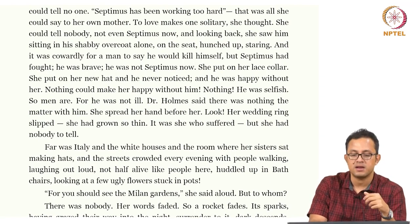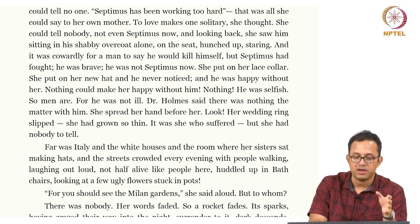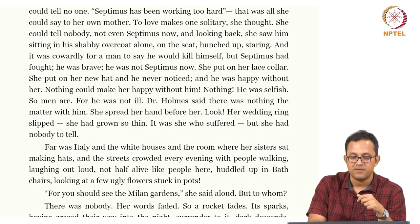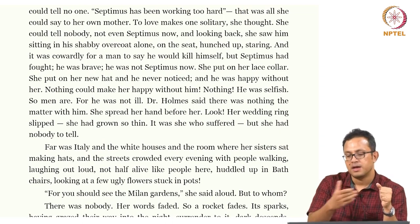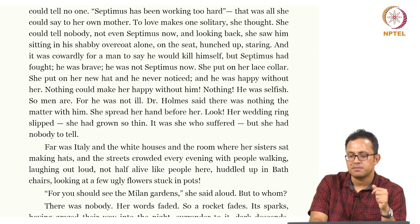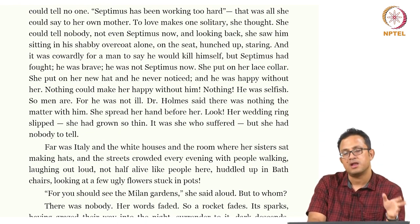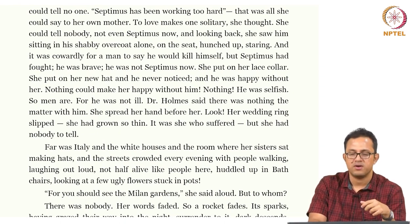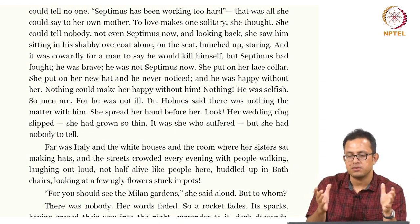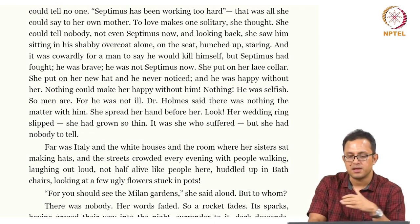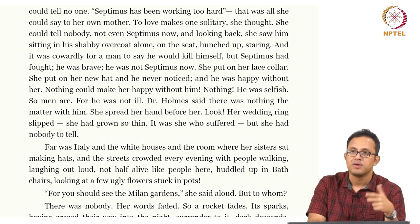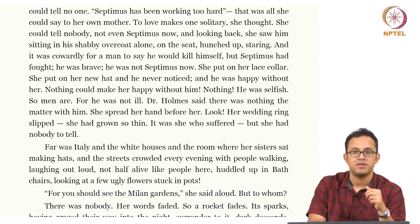'Far was Italy and her white houses and a room where her sisters sat making hats and the streets crowded every evening, people walking, laughing out loud, not half alive like people here, huddled up in bath chairs, looking at a few ugly flowers stuck in pots.' This image of an abundant, fertile, vibrant Italy compared to a pale and almost anaemic London is what Razia conjures in her mind, accentuating her alienation as an Italian woman in post-war London with a medically ill husband who has no connection to the world around him. She is completely cut off and suffers, but has no body to tell.